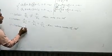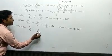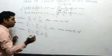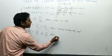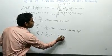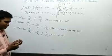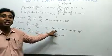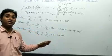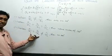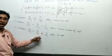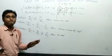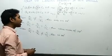The third case: when a₁/a₂ equals b₁/b₂ but not equals to c₁/c₂, then there is no solution — the equations have no solution at all.